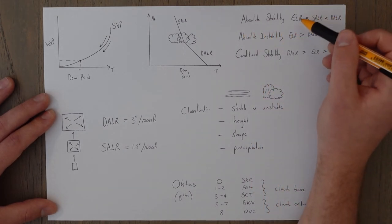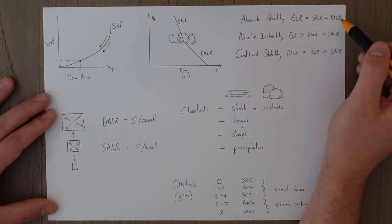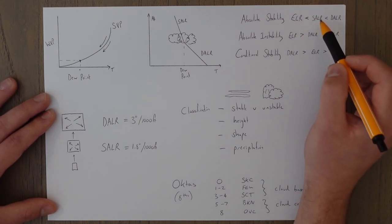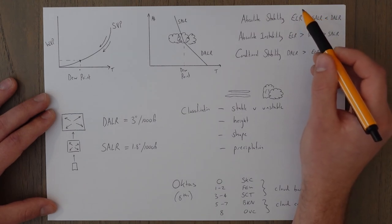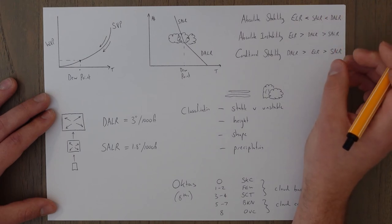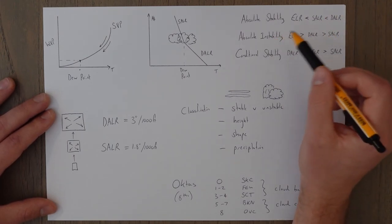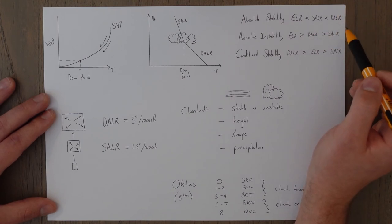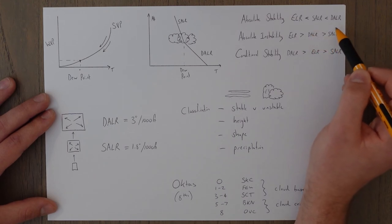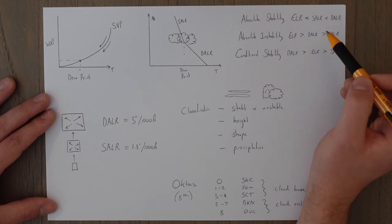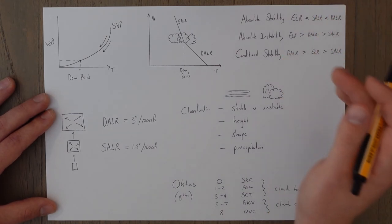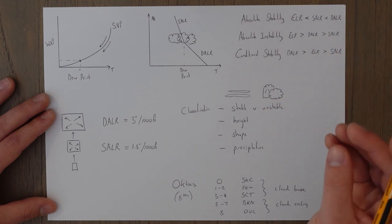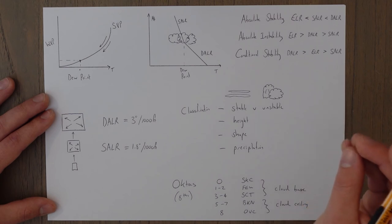Absolute stability is when the environmental lapse rate is lower than both the saturated and dry adiabatic lapse rates — less than 1.8 degrees per thousand feet — meaning the rising air parcel is always colder and denser than the surrounding air and tends to sink. Absolute instability is when the environmental lapse rate is larger than both, meaning a rising parcel is always warmer and less dense and continues to rise. Conditional stability is between the two: dry air is more stable, but once saturated the air becomes unstable and rises.